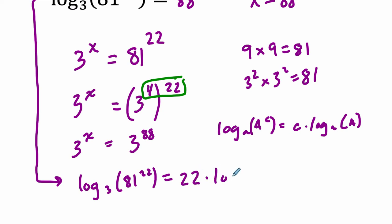22 times the log base 3 of 81. And this helps me think about it because that's going to equal 22. And log base 3 of 81 is just 4. Because 3 to what power is 81? The 4th power. And that equals 88. So you get the same answer, just done in a different way.